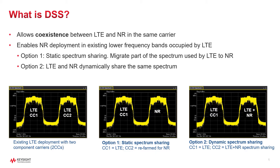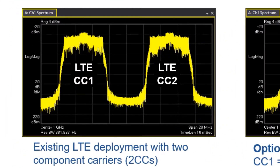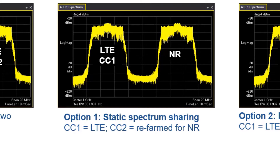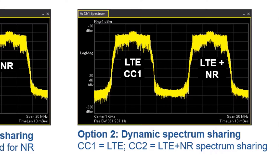Let's first understand what DSS is. DSS allows coexistence between LTE and NR in the same carrier using spectrum sharing. The image shows an example of an LTE deployment with two component carriers. Option one is static spectrum sharing, where one of the LTE carriers is replaced by 5G NR. The drawback with this approach is that initially the main traffic will continue to be through LTE, making it difficult to handle the traffic demand. The second option, which is the most attractive, is dynamic spectrum sharing, where LTE continues to use both carriers, but one carrier can also be used by 5G NR. Resources will be dynamically assigned based on the traffic condition.